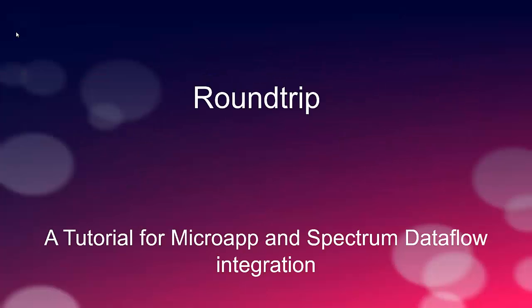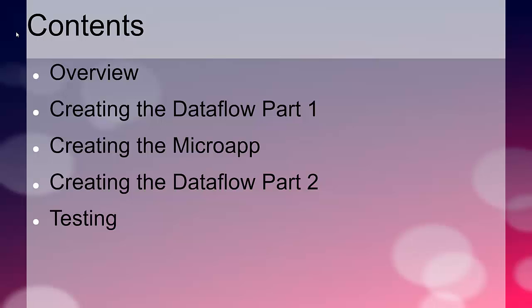Hello and welcome to the round trip tutorial. This tutorial is a hello world example that explains how to integrate a micro app with a user-defined Spectrum data flow. I'll give an overview of what we're trying to accomplish, and then there'll be three parts: step one, creating the data flow and exposing it and testing it on Postman; step two, creating the micro app itself; and step three, the response from the Spectrum server being sent back through to that micro app. We'll conclude with a basic test.